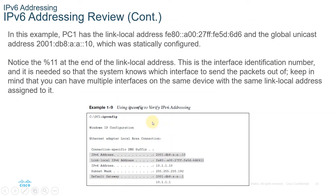In this example, PC1 has the link local address FE80::27FF:FE5D:66 and the global unicast address 2001:DB8:AA:10, which was statically configured. Notice the %11 at the end of the link local address — this is the interface identification number, needed so the system knows which interface to send packets out of. Keep in mind that multiple interfaces on the same device can have the same link local address assigned — that is something unique about IPv6.